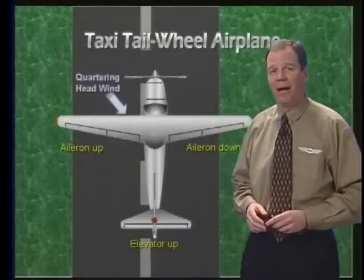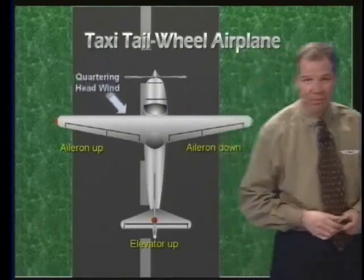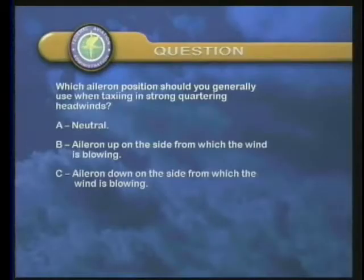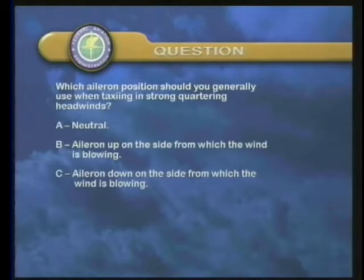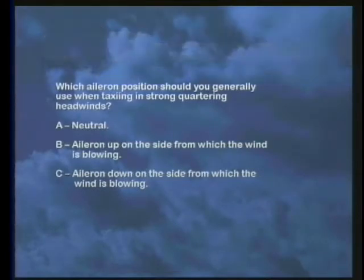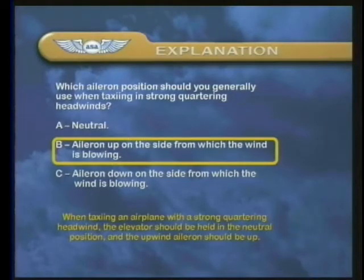Time for an FAA test question. Which aileron position should you generally use when taxiing in strong quartering headwinds? A: neutral; B: aileron up on the side from which the wind is blowing; or C: aileron down on the side from which the wind is blowing? Your answer is B — aileron up on the side from which the wind is blowing.